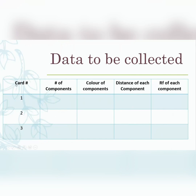For data to be collected, we'll use a table with card number — one, two, three or A, B, C. We record the number of components obtained for each card. Since there may be more than one component, you split that box accordingly. Then record the color of each component, the distance traveled by each component, and the RF value of each component. Repeat this data collection for all three cards.